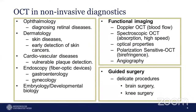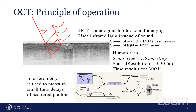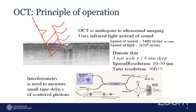OCT is analogous to ultrasound. In ultrasound, sound waves produce echoes from different depths in body tissue to generate cross-sectional images. Similarly, OCT works on the principle of light — light is backscattered from different layers of the body, and the interference signal is then processed.